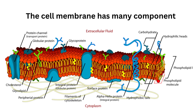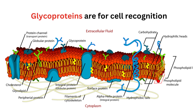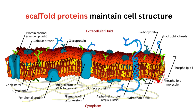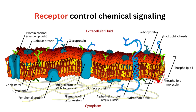Beyond transport proteins, there are many other types of proteins in the cell membrane. There are glycoproteins with oligosaccharide chains jutting out that help cells recognize one another. There are scaffold proteins that bind with structures inside or outside of the cell to maintain cell shape and location, and lastly there are receptor proteins that receive signals from outside of the cell.